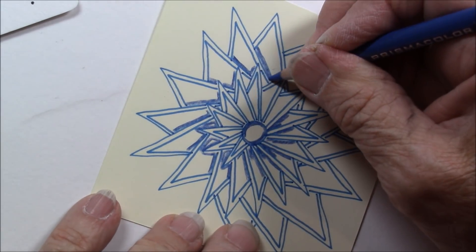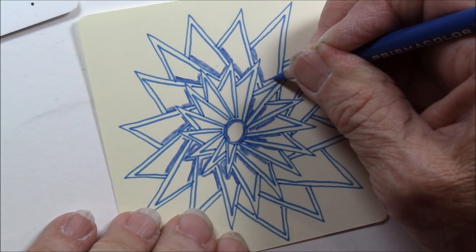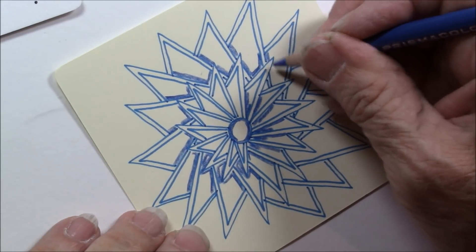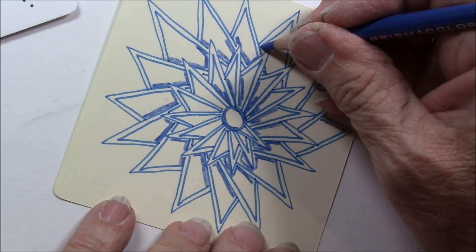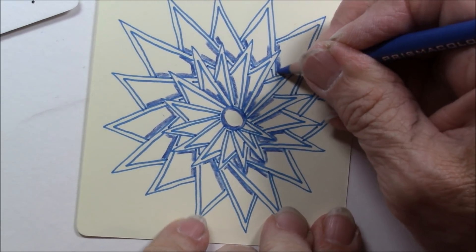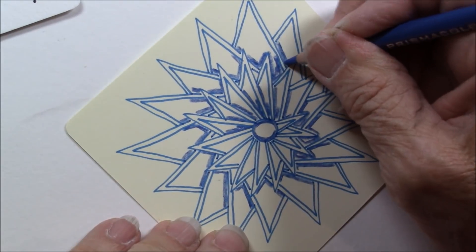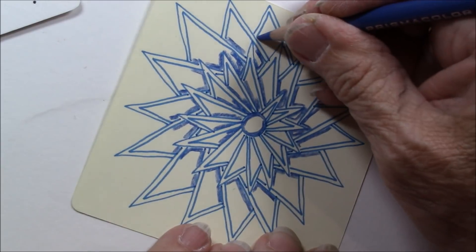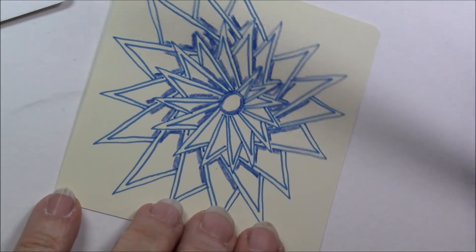Again, you see I am turning my tile as I go. It makes it so much easier to tangle if you turn your tile, and not try to turn your hand. And we'll see if I have enough blue down to get the effect I want. So I have all that.